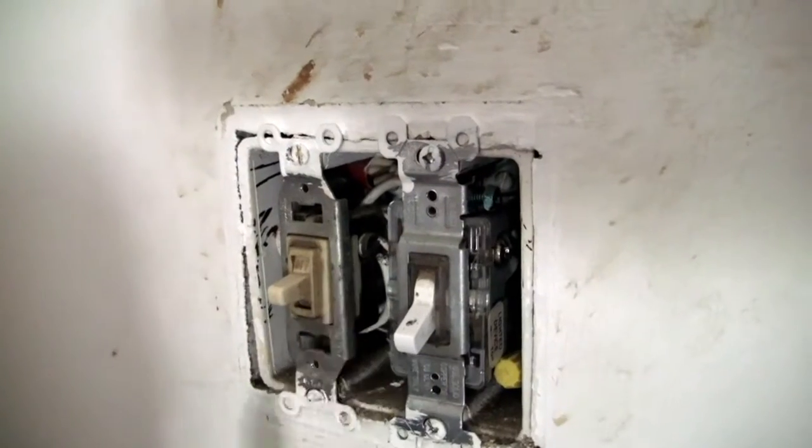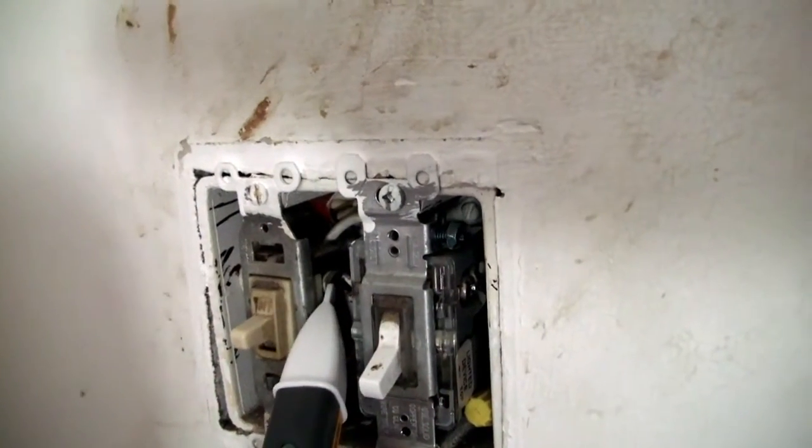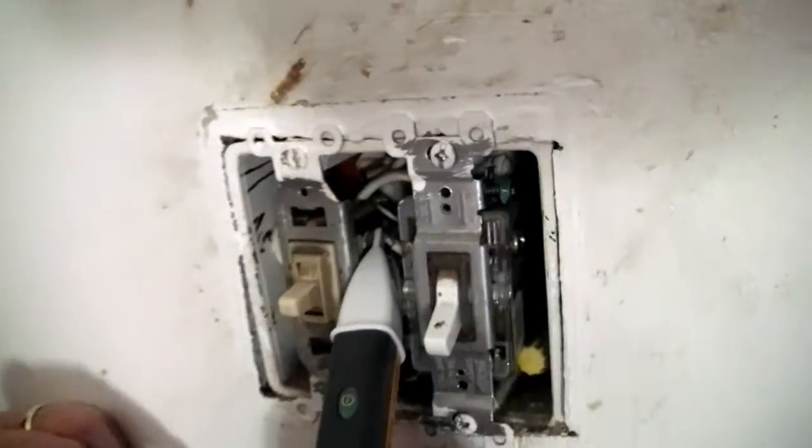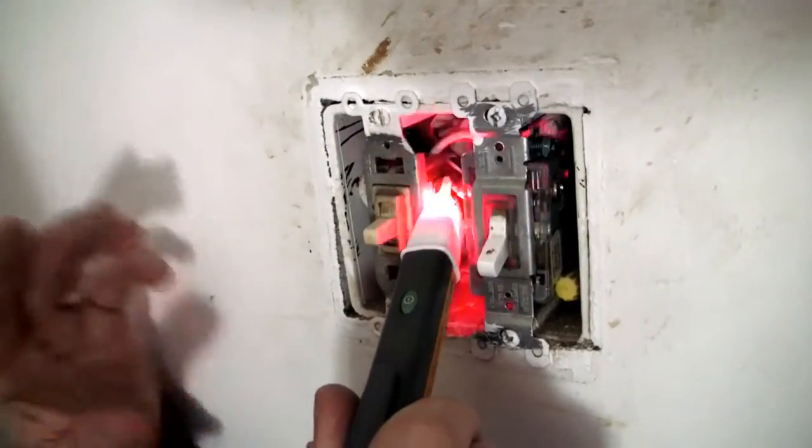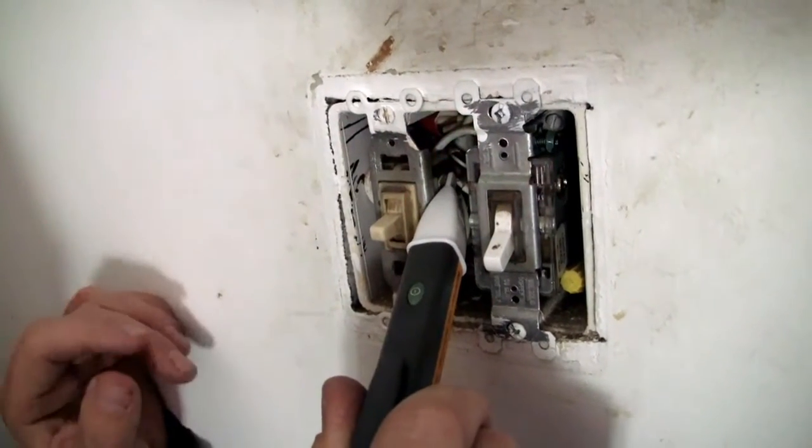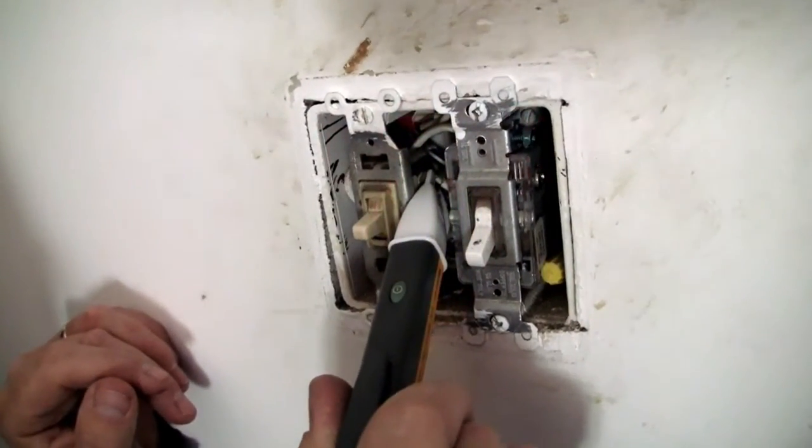So to use this tester, all I'm going to do is touch where the power comes in and right now it's flashing red which means that there's no power. But if it was glowing red and giving a beep it would say that it does have power. So I know that the circuit is off.